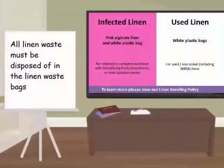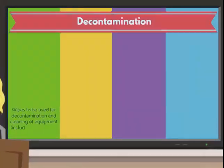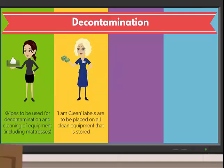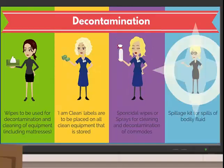For linen, use the appropriate waste bags: pink lined bags for infected linen and white plastic bags for used linen. Decontamination includes a range of resources: wipes for decontamination and cleaning of equipment, clean labels to be placed on all stored clean equipment, sprays for cleaning and decontamination of commodes, and spillage kits for spills of bodily fluid.